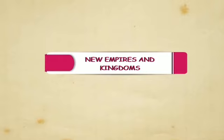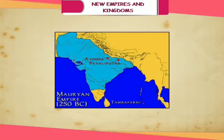Growth of kingdoms and changes therein was a continuous phenomenon. With the passage of time, new rulers emerged. They conquered different regions and had different policies of government. A key difference was that, unlike earlier when only Kshatriyas could rule, people from the Vaishya community were now coming to power. In this chapter, we shall study the important kings and happenings of the period covering the 4th century CE to the 7th century CE.